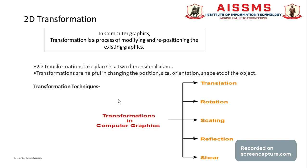2D transformation takes place in a two-dimensional plane, which is why it is called 2D. In a transformation, we require the x and y planes. The transformation is helpful for changing the position, size, orientation, shape, and other properties of an object.